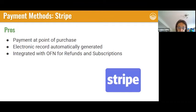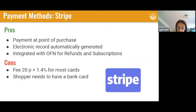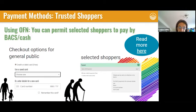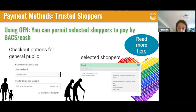Stripe is the payment method we tend to advocate on OFN for card payments. It's fully integrated with OFN in terms of refunds and subscription payments. The disadvantages are that there is a fee and the shopper needs a bank card, so it may not be as accessible for those who prefer cash. Using tags and tag rules on the platform, you can give selected shoppers permission to pay by cash and require everyone else to pay by card. So if you trust people and know they'll turn up for their order, you can let them pay cash on collection, while others pay up front by card.